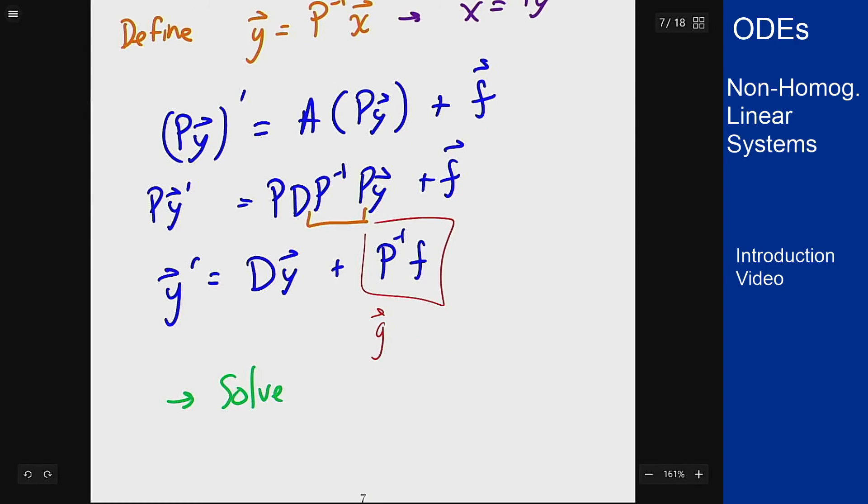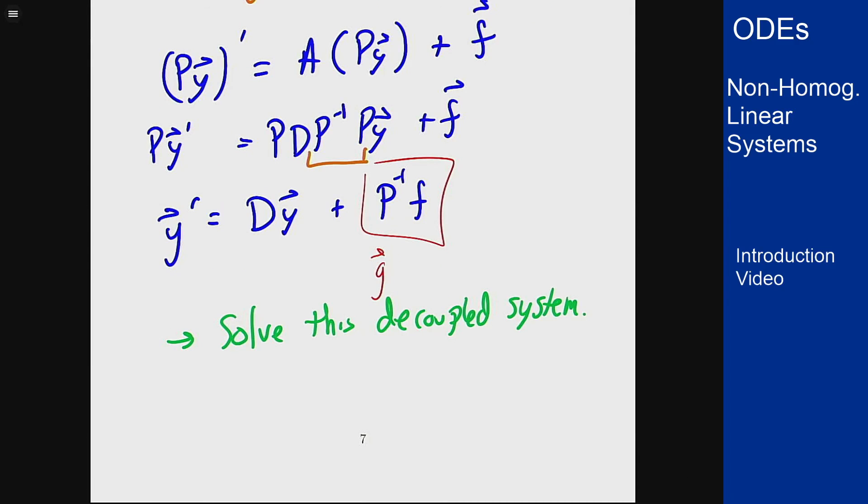So we can solve this decoupled system to get the answer and then I can multiply that by P to go back to x. Then since x is Py, I can convert this y solution into the x one that I wanted in the first place.